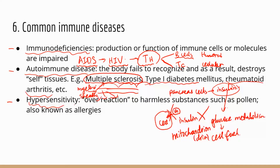The third condition is hypersensitivity — where the immune system is overreacting. A healthy person's body can recognize harmless substances and not mount an aggressive immune response, but people with hypersensitivity have an immune system that overreacts to harmless substances such as pollen or animal dander — things that won't make you sick. This condition is also known as allergies.